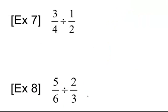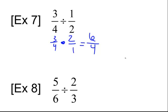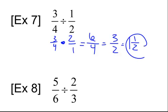For number seven, we multiply by the reciprocal. The first number always stays the same — change it to multiplication, then do the reciprocal, which is two over one. Three times two is six, four times one is four, we get six-fourths. But we have to put that into lowest terms, so we divide by two and get three-halves. Two can go into three once, with one left over out of two, so it's actually one and a half.